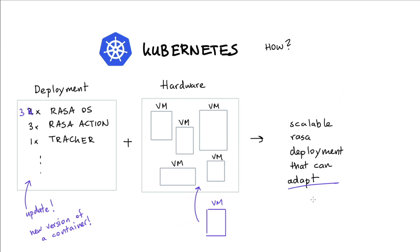This is what I mean by 'adapt.' Kubernetes doesn't just deploy — it also makes it easy to update a deployment. Let's now start talking about how Kubernetes actually does this, because we'll need to introduce a couple of concepts to make clear what's happening under the hood.